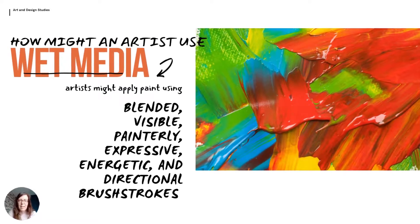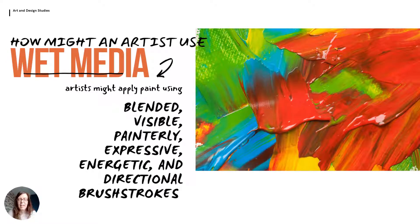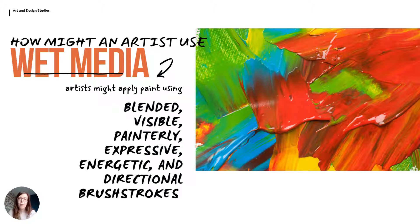Next up we're going to look at wet media — so that's paint: watercolour, oil paints, or acrylics. What we're thinking about here is the way in which brush strokes help to apply the paint to the paper or canvas. There may be artworks where brush strokes are not visible — they might be blended and smooth so that it almost looks like a photograph. However, in other artworks the brush strokes are very visible and obvious, applied in an expressive, painterly way, quite roughly and directional to suggest energy and texture.